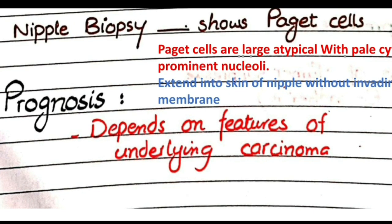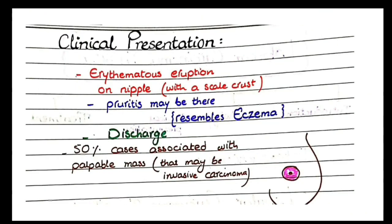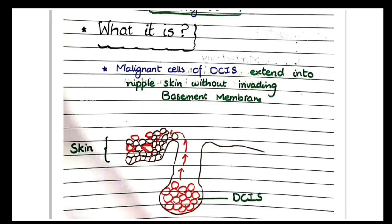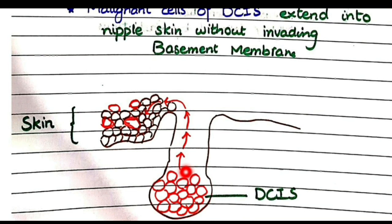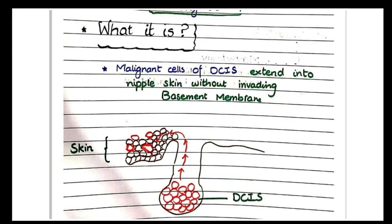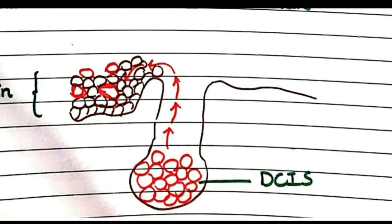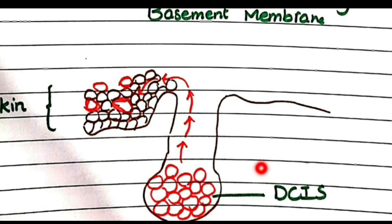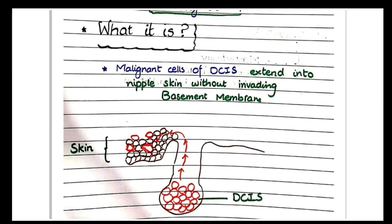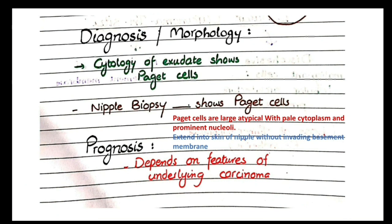The prognosis of Paget's disease of nipple depends on the features of the underlying carcinoma. Paget's disease of nipple is actually a manifestation of underlying ductal carcinoma in situ, or sometimes there may be an underlying full-blown invasive carcinoma. The prognosis depends upon the stage and morphology of that underlying carcinoma — whether it is carcinoma in situ or invasive carcinoma.